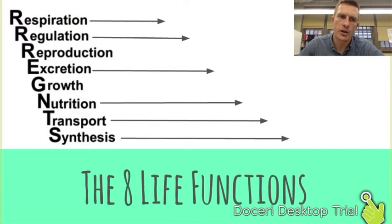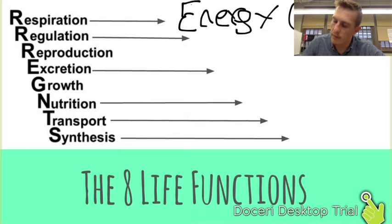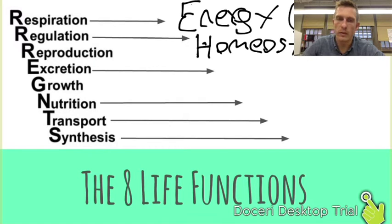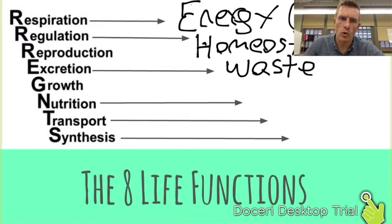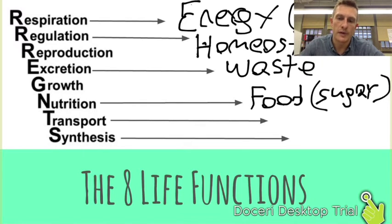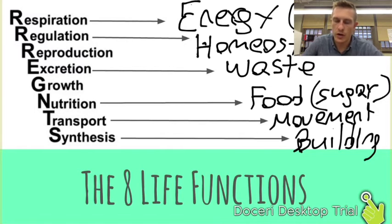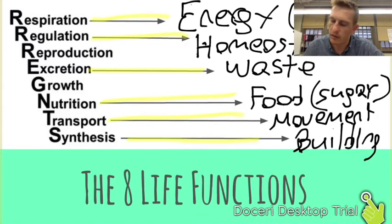Let's do a quick word association — flip over your green sheet. Respiration means energy, and energy in this class is ATP. Regulation means homeostasis. Excretion means waste. Nutrition means food — but remember, food is sugar and sugar is glucose. Transport has to do with movement between the inside and outside of the cell. Synthesis means building large, complex things from simple smaller subunits. If you can do these quick word associations, you should do well on upcoming checks for understanding — in fact, you have one immediately following this video.